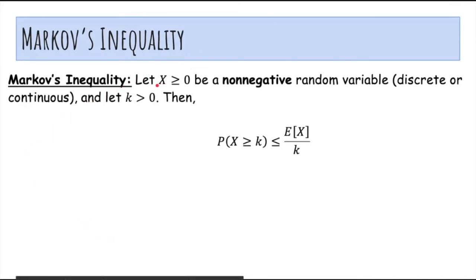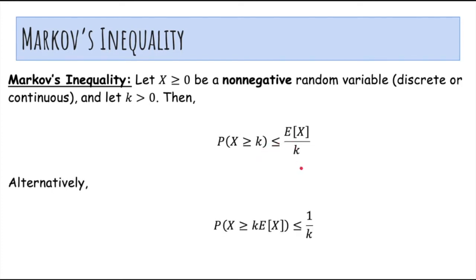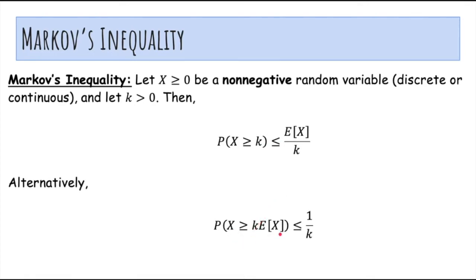So in general, if x is a non-negative random variable and k is greater than 0, Markov's inequality says that the probability that x is at least k is upper bounded by the expected value of x divided by k. Alternatively, the probability that x is at least k times the mean is upper bounded by 1 over k.